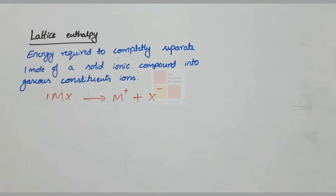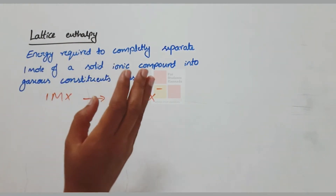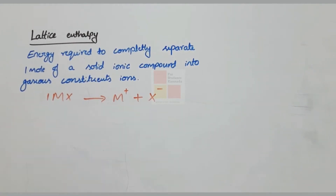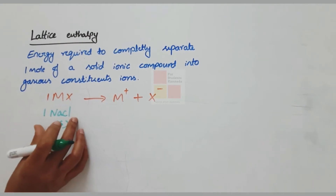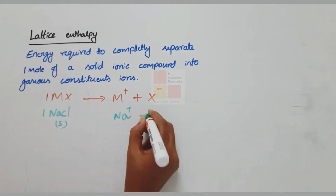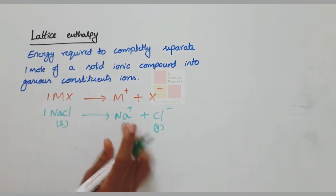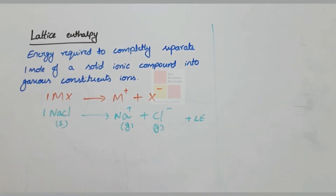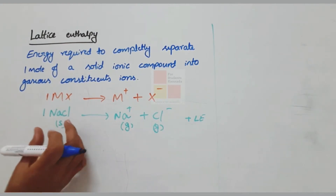In the last video, we learned what lattice enthalpy is. It is the energy required to completely separate one mole of solid ionic compound into its gaseous ions. For example, one mole of solid NaCl — to break it down and separate it, we apply energy that we call lattice enthalpy. Remember, this lattice enthalpy is a property of the ionic compound.